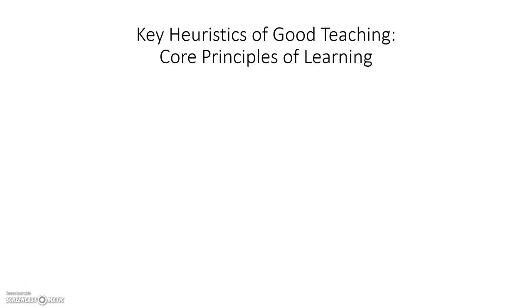Let's begin with some key things — key heuristics. These are good rules of thumb based on validating knowledge of learning that relates to good teaching: what I call the core principles of learning. There are 10 of these in the next two slides. You won't digest it all at once, but you can download the slides and think about it. Essentially, these are things that, if implemented well, enhance a learning experience for students.